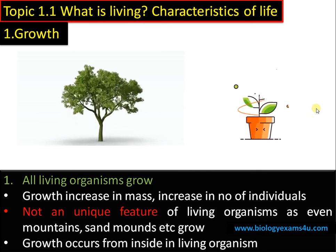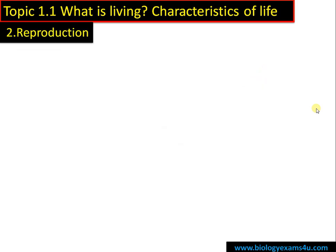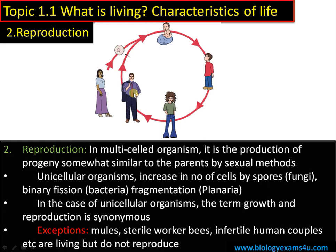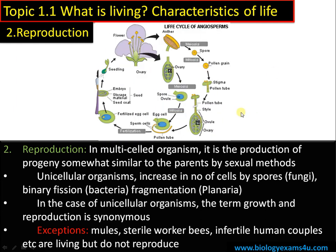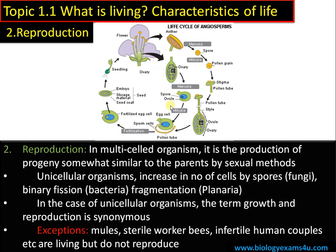The second characteristic is reproduction. In the case of multicellular organisms like humans and higher animals, there is sexual reproduction where egg and sperm — from mother and father — fuse to form a zygote, which later develops into an embryo and then a child, and the cycle continues. In the case of plants also, male and female reproductive structures form male and female gametes that fuse to form a zygote, later developing into a seed that germinates to form a new plant.